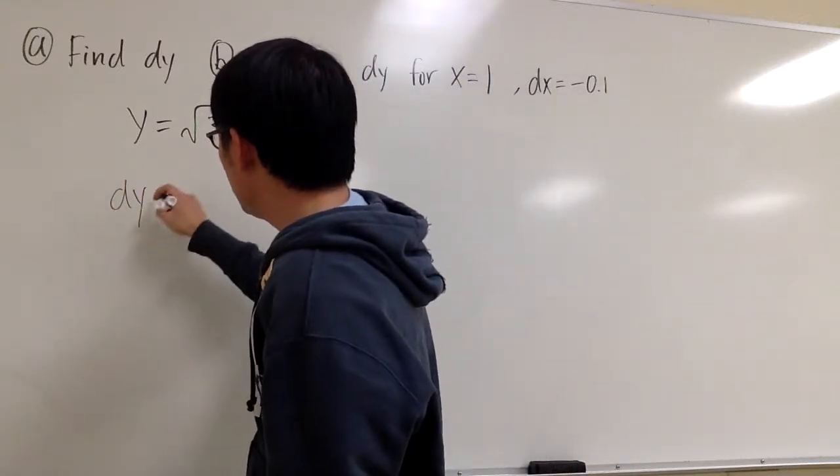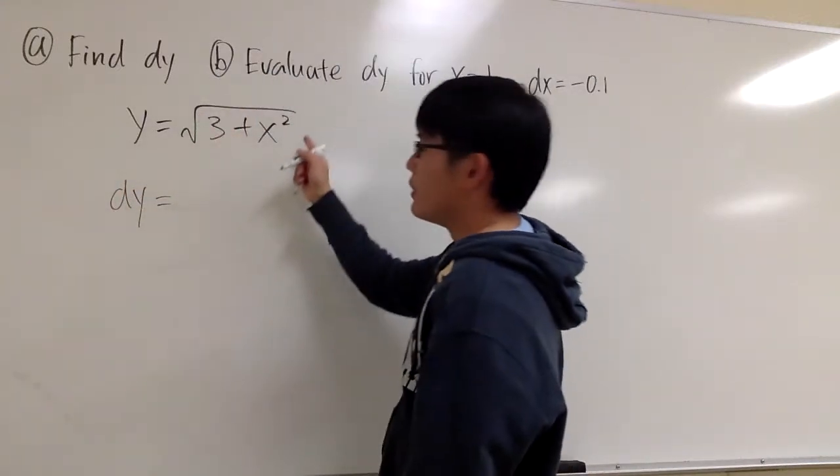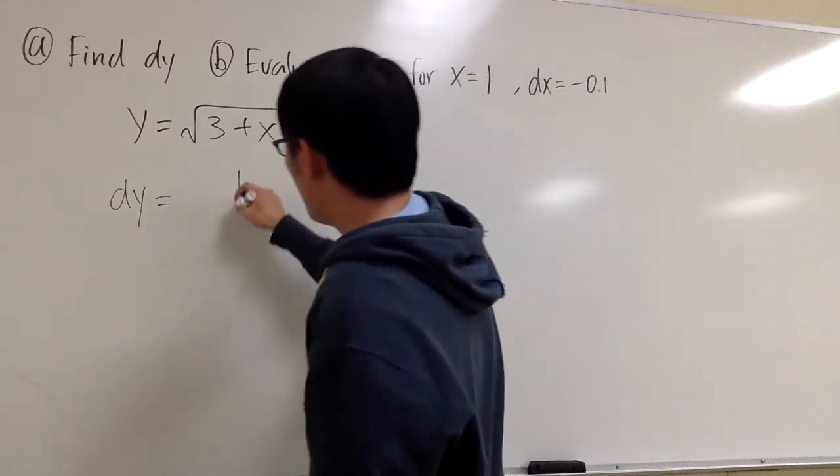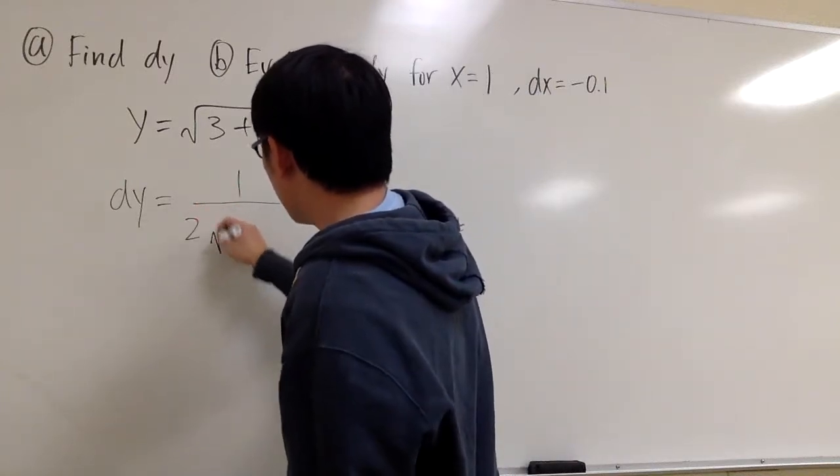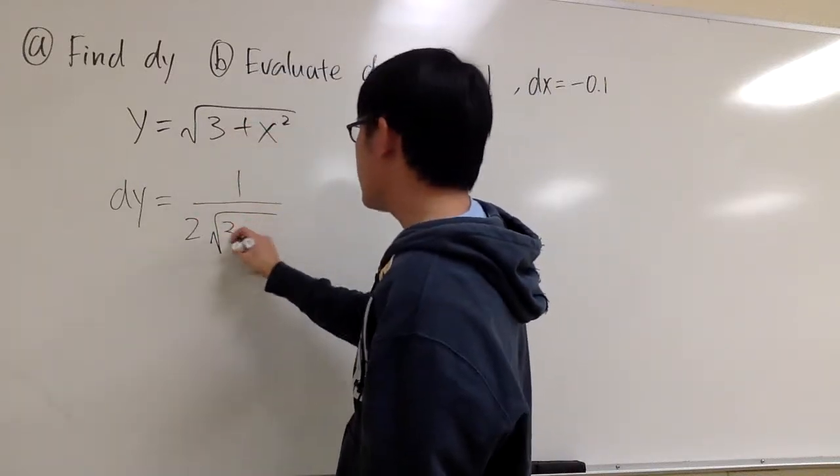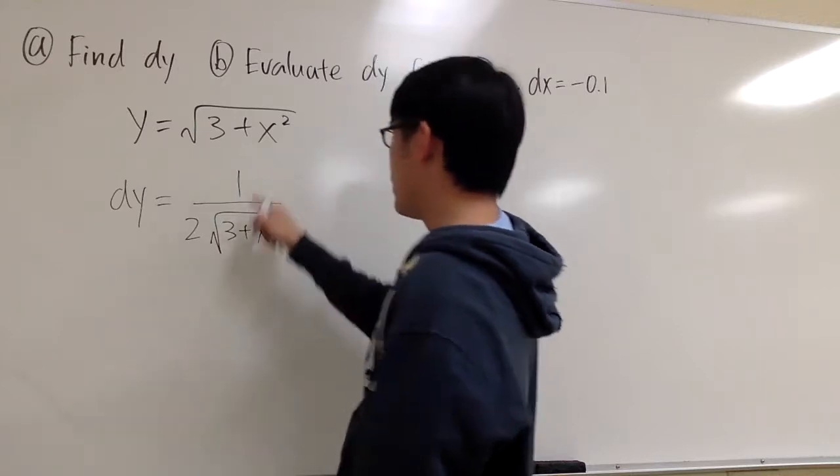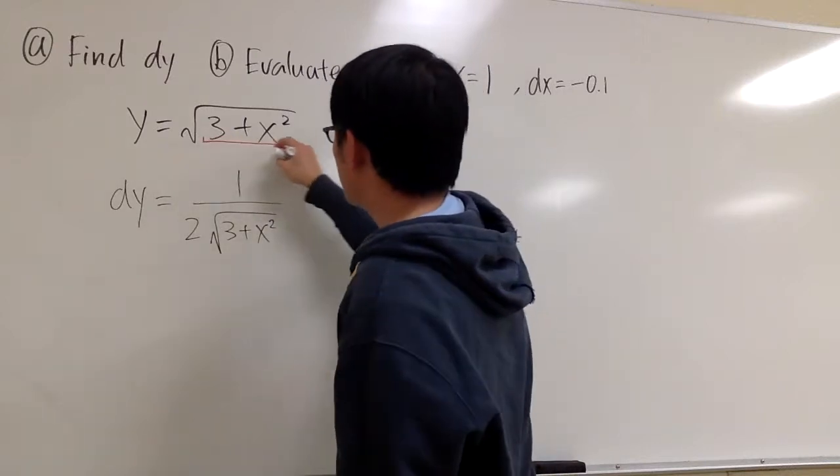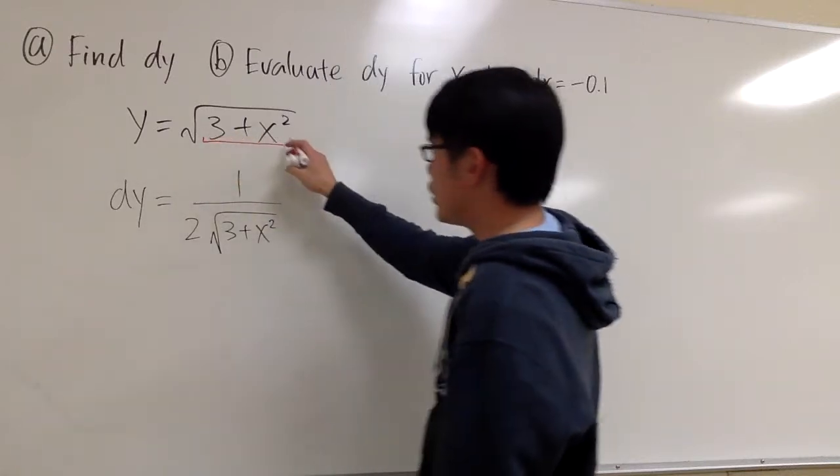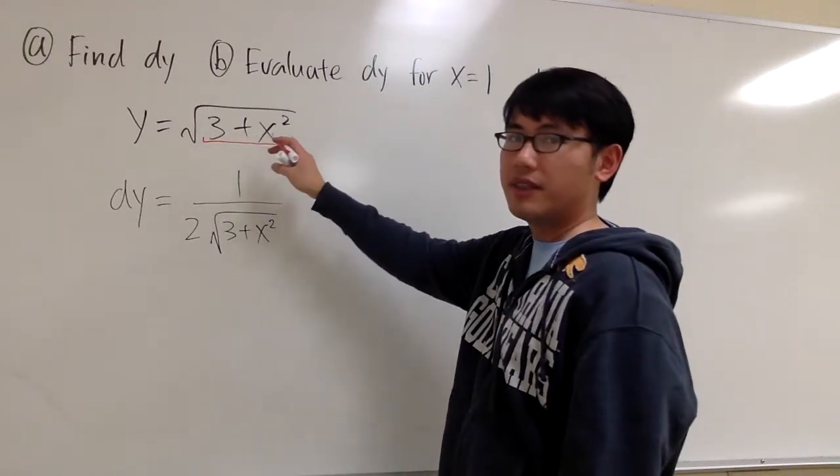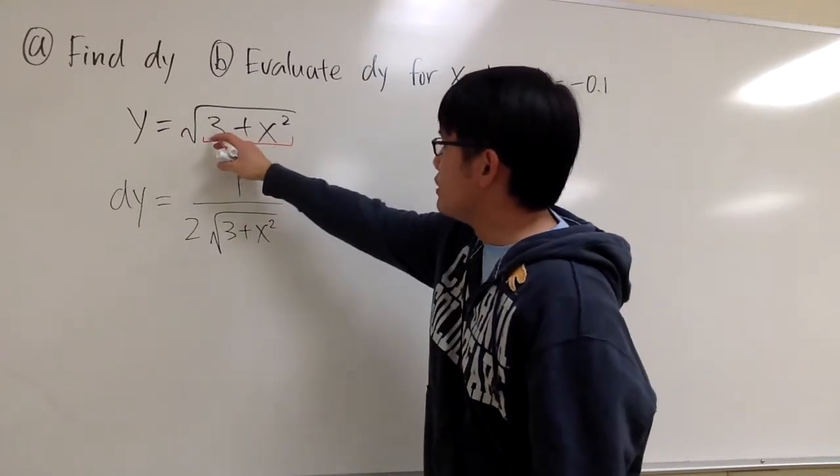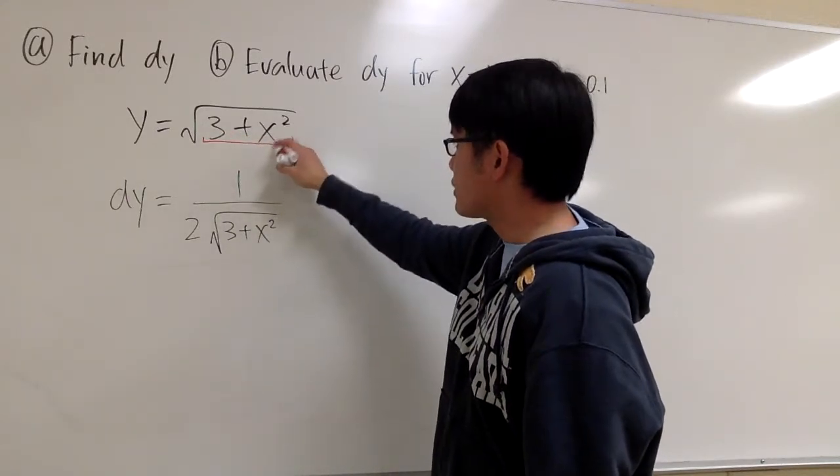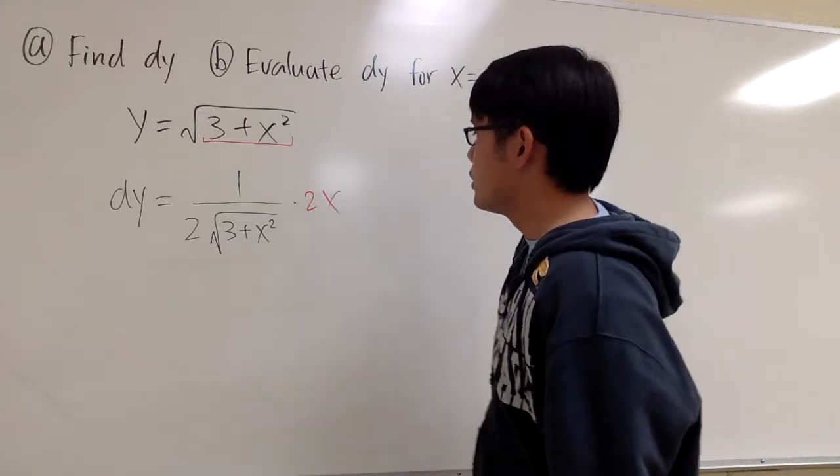So dy is equal to the derivative of square root of something. It's going to be 1 over 2 times square root of the same thing inside. So this becomes 1 over 2 square root of 3 plus x squared. But then we have to look into the square root. Because of the chain rule, we have to multiply by the derivative inside. Derivative of 3 is 0, derivative of x squared is 2x, so we multiply by 2x.